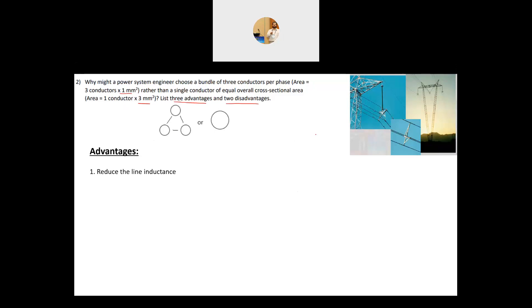Before we talk about bundling, let's have a look. What is a bundle here? So this is a tower and here is the insulator and this is just one phase and you can see here one, two, three, four, basically four conductors are bundled in that specific phase.